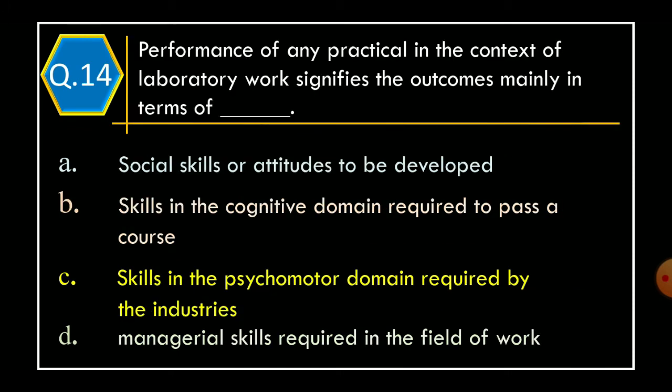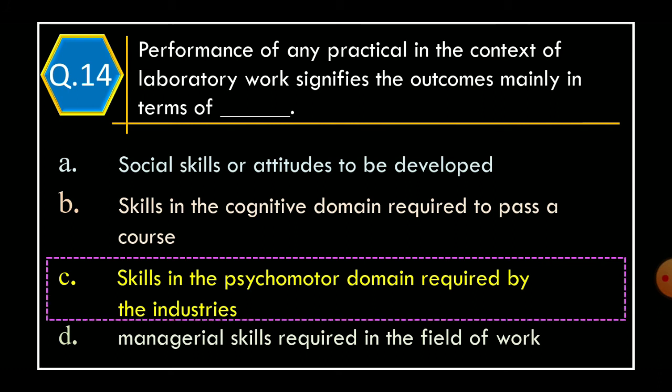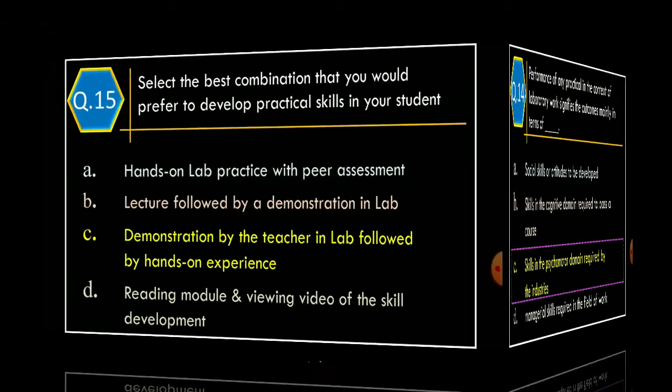Question 14: Performance of any practical in the context of laboratory work signifies the outcomes mainly in terms of — Option A, social skills or attitudes to be developed; Option B, skills in the cognitive domain required to pass a course; Option C, skills in the psychomotor domain required by the industries; Option D, managerial skills required in the field of work. The correct option is Option C: skills in the psychomotor domain required by the industries.